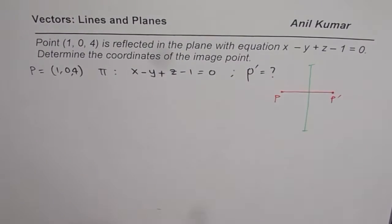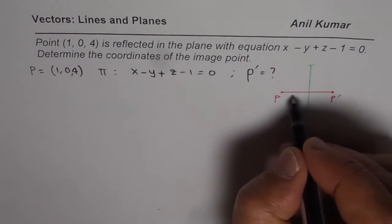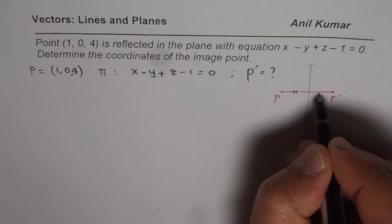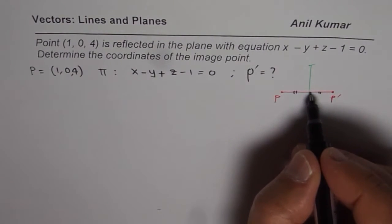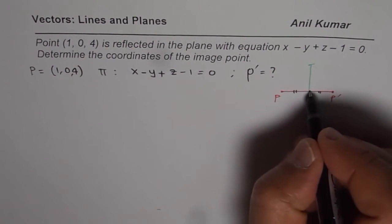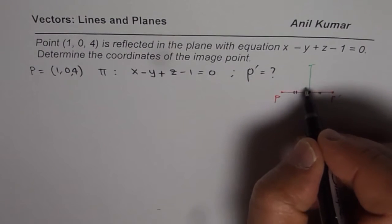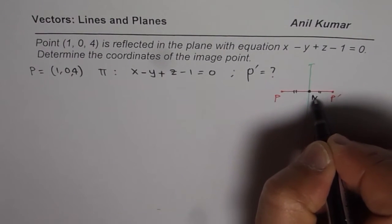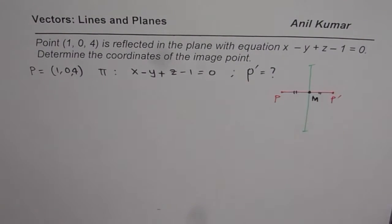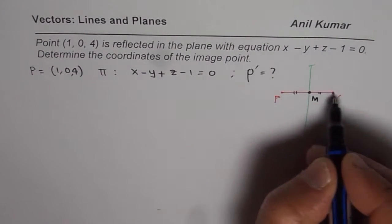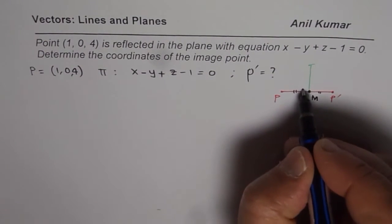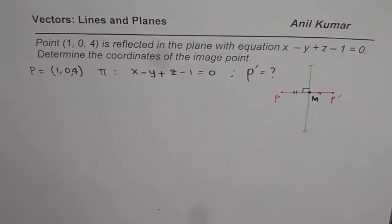It is important to note that these two points will be the same distance away from the plane, so it's good to find the midpoint first. We know this midpoint will be on a line joining P and P-dash, which is going to be perpendicular to the plane.